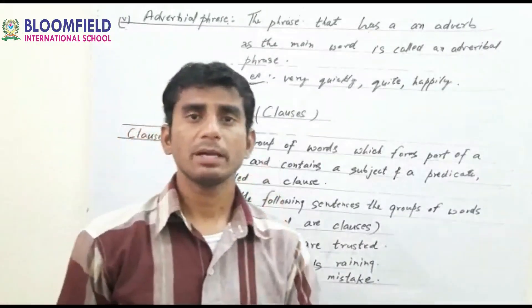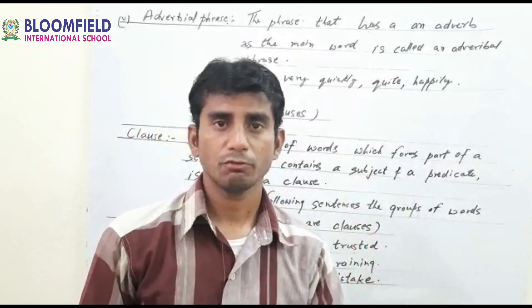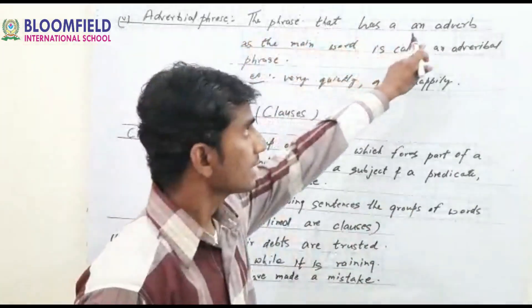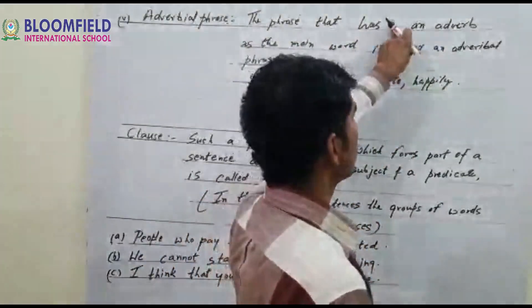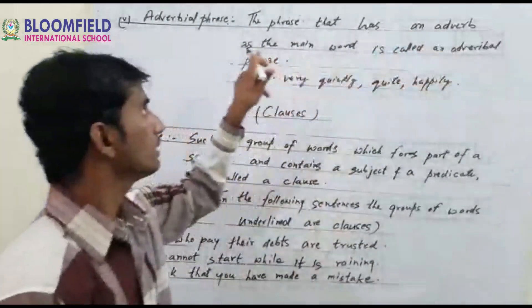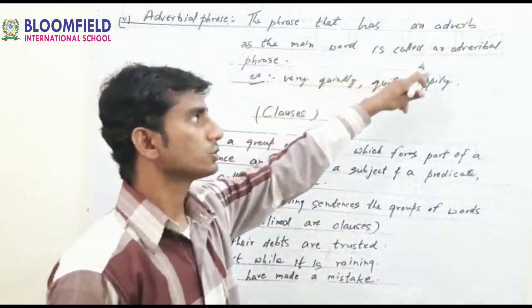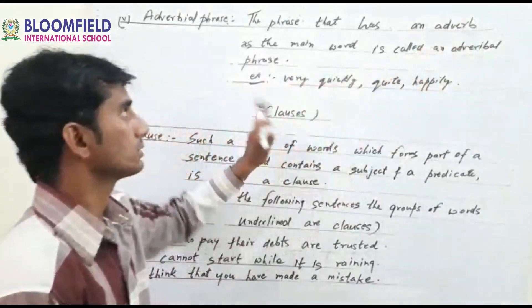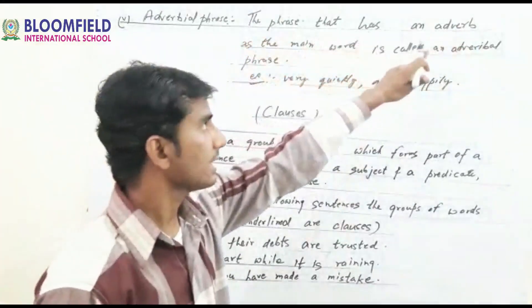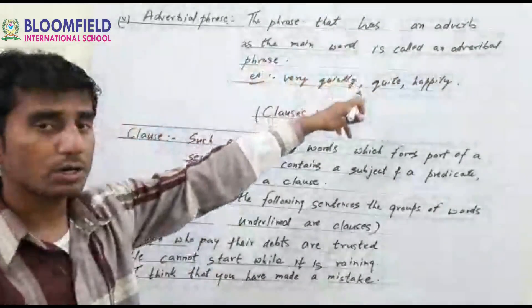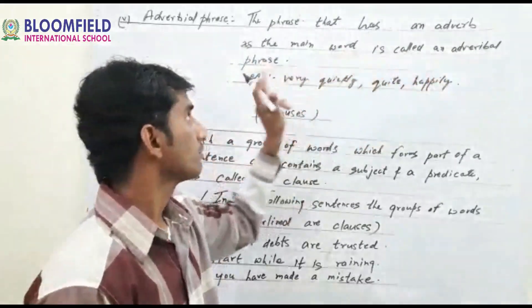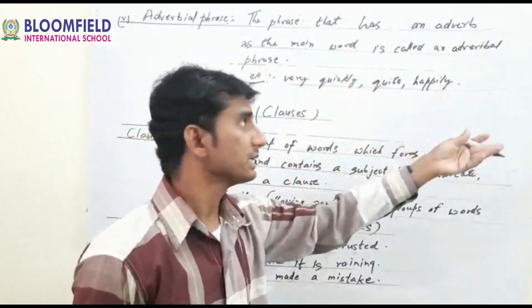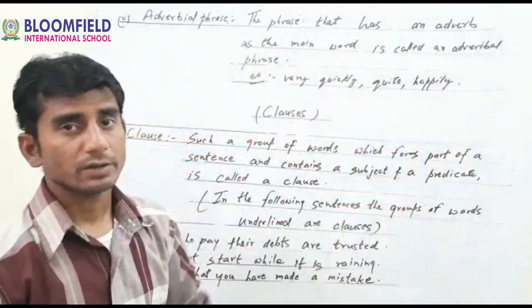Next is adverbial phrase — the fifth type. The phrase that has an adverb as the main word is called an adverbial phrase. Once again: the phrase that has an adverb as the main word is called an adverbial phrase. Examples: very quickly, after that, quite happily, etc.